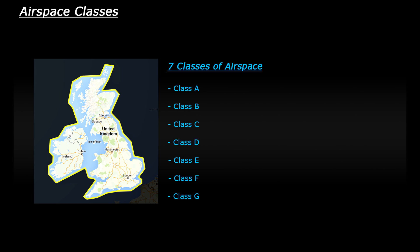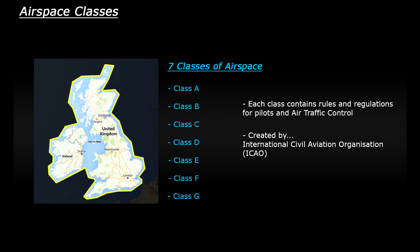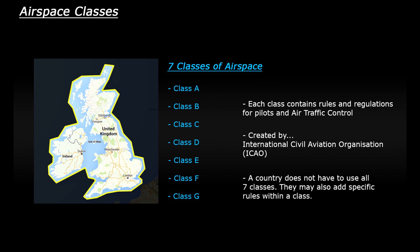Each airspace class is basically a set of rules which describes how aircraft should fly and how air traffic control interact with those aircraft. This allows a country to better control the flow of planes within its airspace for safety and security. These seven classes have been created and defined by the International Civil Aviation Organization, or ICAO for short, in an attempt to standardize airspace across the planet. All countries adhere to these regulations, however they do alter the airspace classes to suit their own needs.